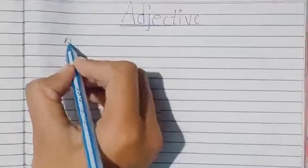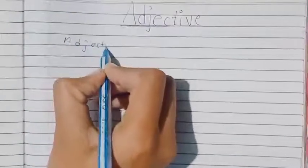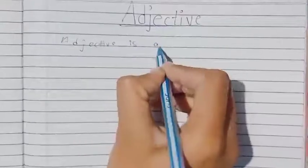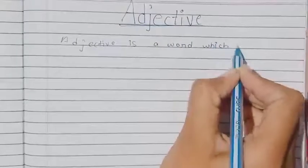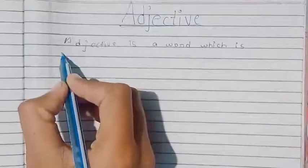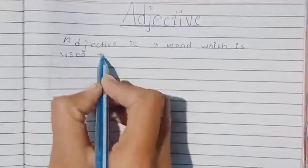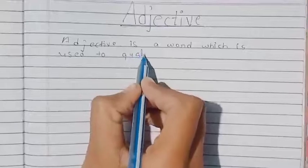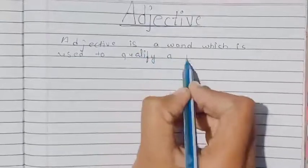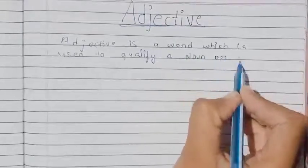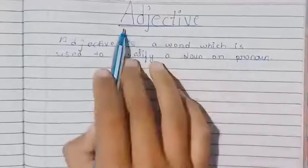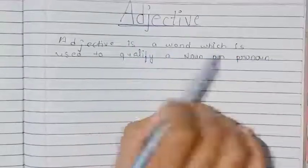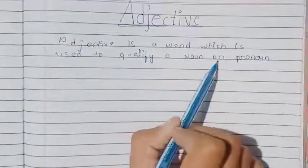What is adjective? Adjective is a word which is used to qualify a noun or pronoun.